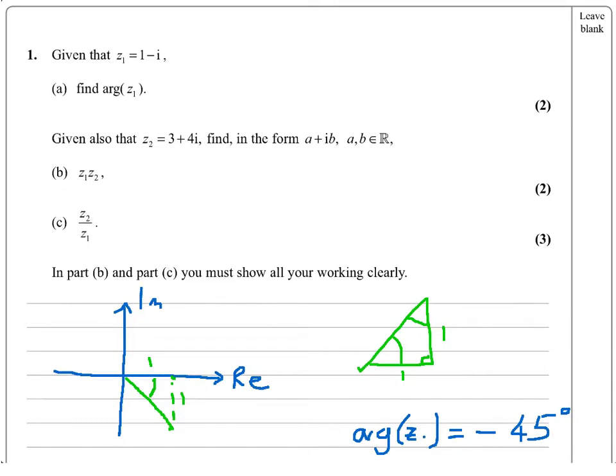and in fact the mark scheme clearly says it accepts both. It's a two-mark question. It's a method mark for considering the right-angled triangle using arctangent, or the fact that I said it was isosceles, and an accuracy mark for the answer of minus 45 degrees.